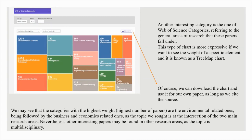Another interesting category is the one of Web of Science categories, referring to the general areas of research that these papers fall under. This type of chart is more expressive if we want to see the weight of a specific element and it is known as a tree map chart. We can download the chart and use it for our own paper as long as we cite the source. We may see that the categories with the highest weight — the highest number of papers — are the environmentally related ones, followed by the business and economics related ones, as the topic is at the intersection of the two main research areas. Other interesting papers may be found in other research areas, as the topic is multidisciplinary.